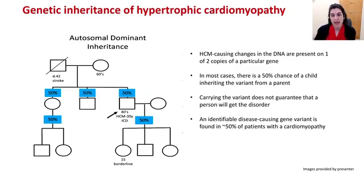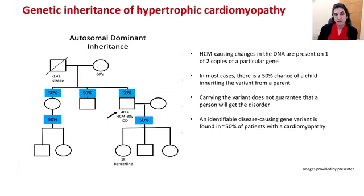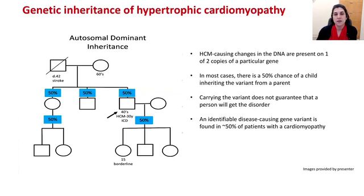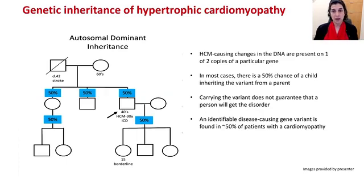Carrying a genetic variant that can cause disease does not mean that somebody will actually develop the disease. This is the concept of penetrance — the genetic change may result in a variable presentation ranging from no disease at all to very mild to very severe, and we do not have reliable ways of predicting that. An identifiable disease-causing genetic change is found in about 50% to 60% of people with a cardiomyopathy, so genetic testing is helpful not just for informing the patient but for informing family members about their own risk of developing disease.